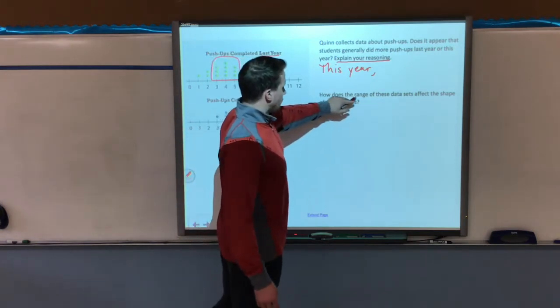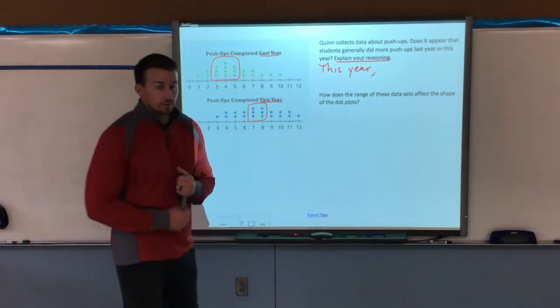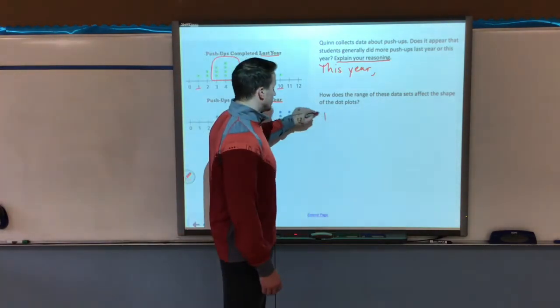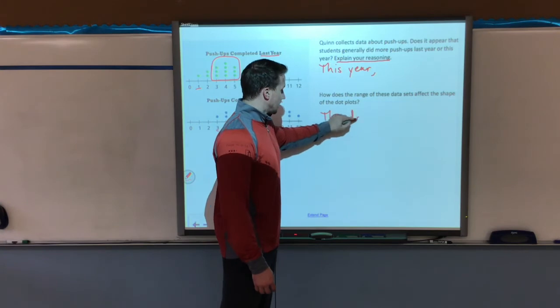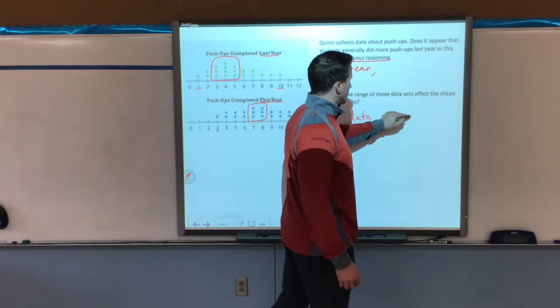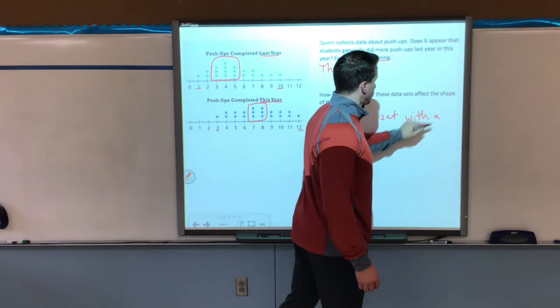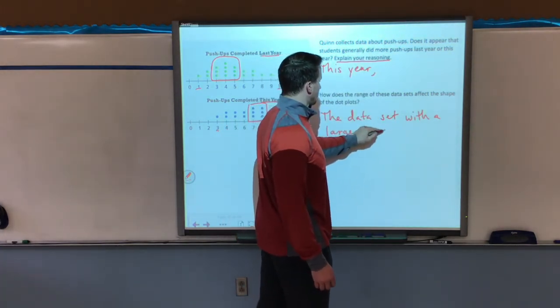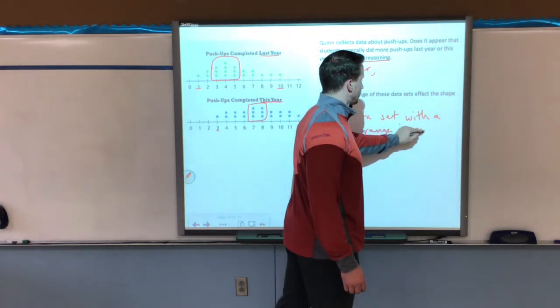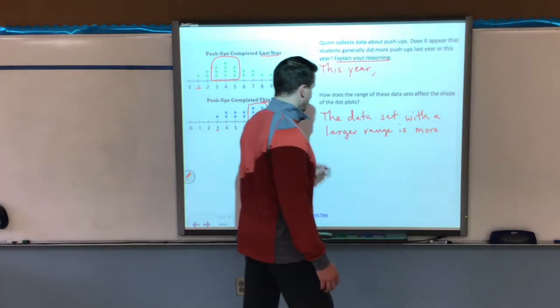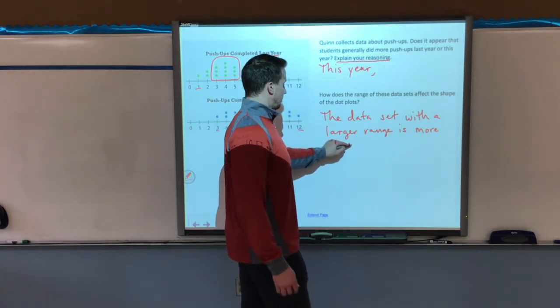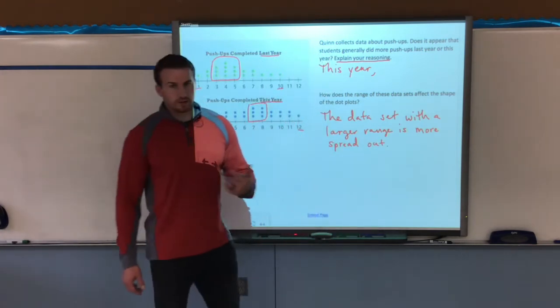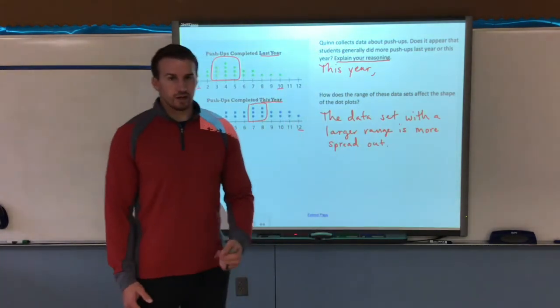Second question says, how does the range of these data sets affect the shape of the dot plots? So what we're saying here is that the data set with a larger range will be more spread out. Now, in this case, they're about the same because they both had a range of, of course, nine. 10 minus one is nine. 12 minus three is nine.